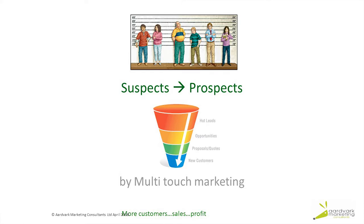A prospect is somebody that's come from a suspect pool. They've got the right symptoms of pain that your business can help with. We know who they are, we're actually talking to them, and they're ready to buy. So the difference between a suspect and a prospect is whether you've identified them and you're starting to have a conversation.